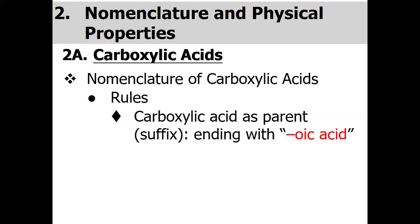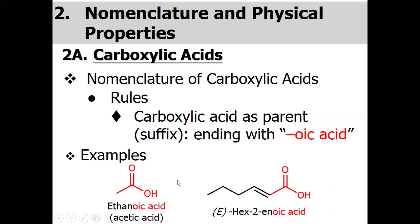Let's start with how to name carboxylic acids. The rules are very similar to naming alkanes — select the longest chain and start numbering to give the carboxylic acid carbon the highest priority, which means the carbonyl carbon is always given position number one. For example, this structure has two carbons, so the parent is ethane. The 'e' is replaced with 'oic acid,' giving the systematic IUPAC name: ethanoic acid, also known as acetic acid.